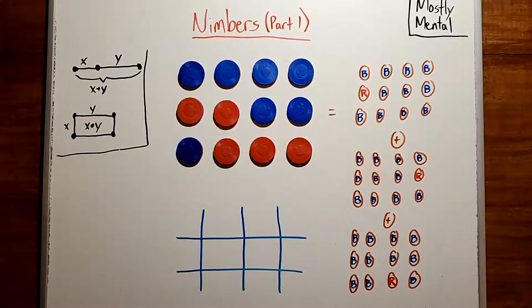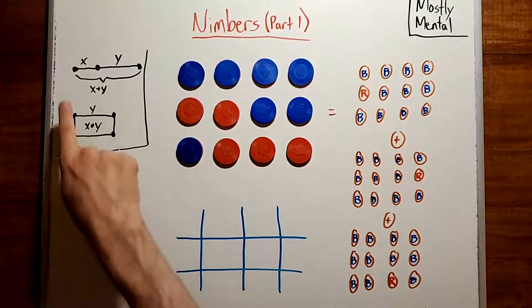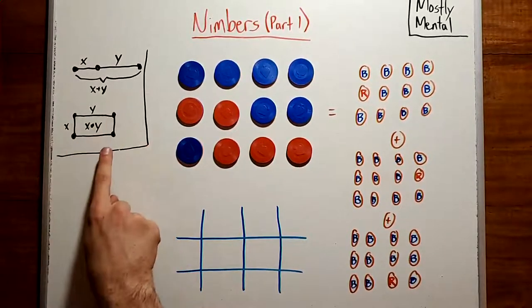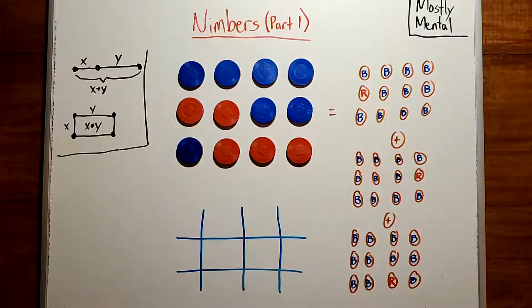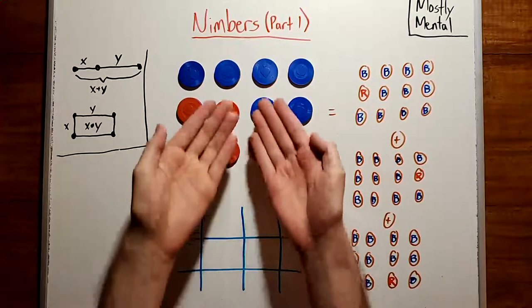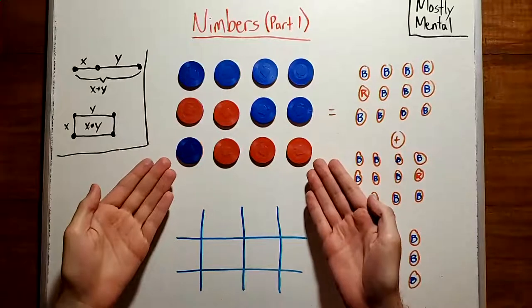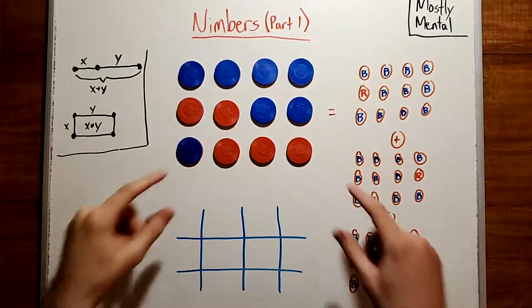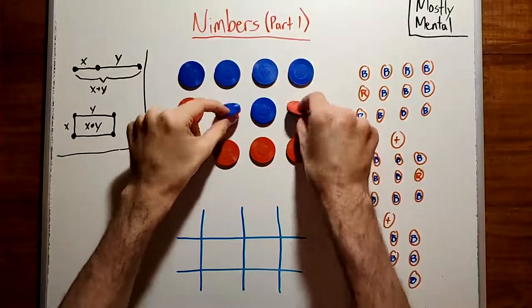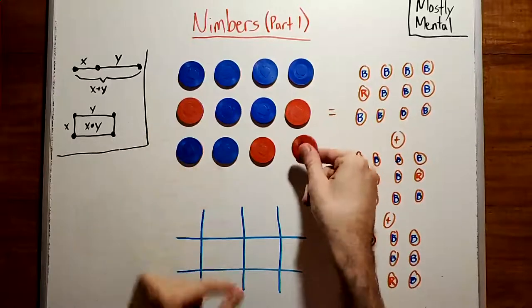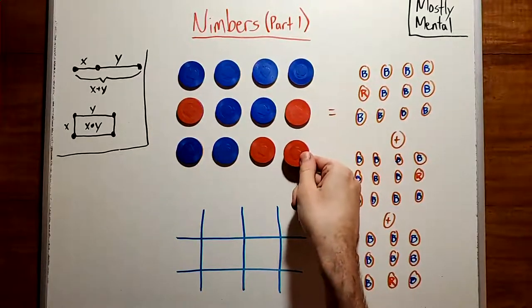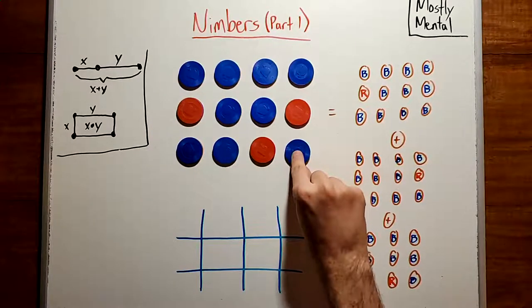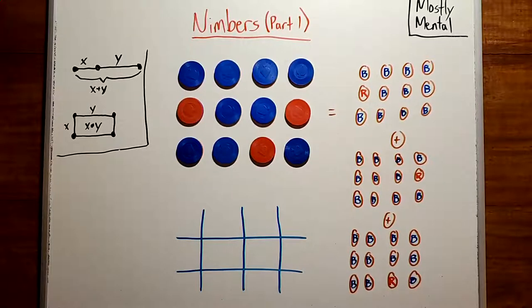When we go from addition to multiplication with regular numbers, we go from lines to rectangles. So let's do the same with games. We'll take Twins and extend it to two dimensions. Instead of a line of coins, we have a grid. And a move is flipping over the four corners of a rectangle, with the rule that the bottom right corner of that rectangle goes from red to blue. This game is called Turning Corners. Let's analyze it.